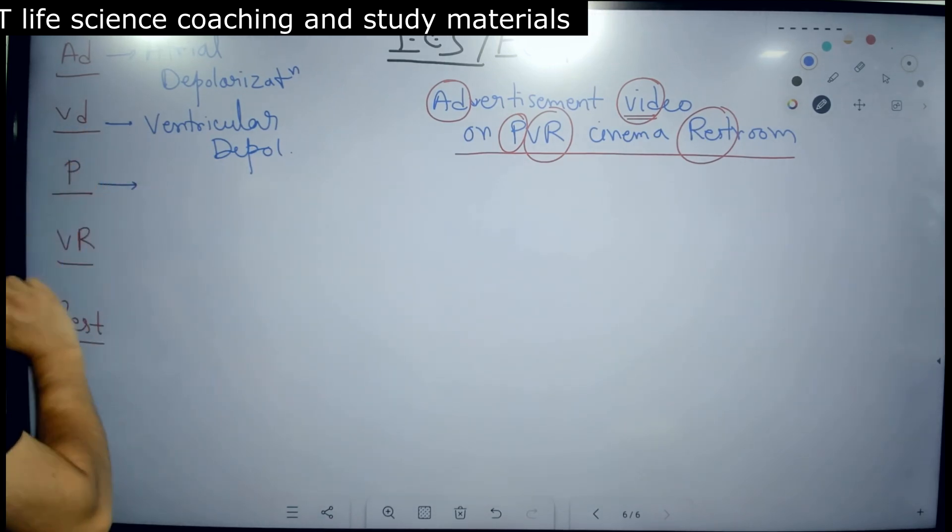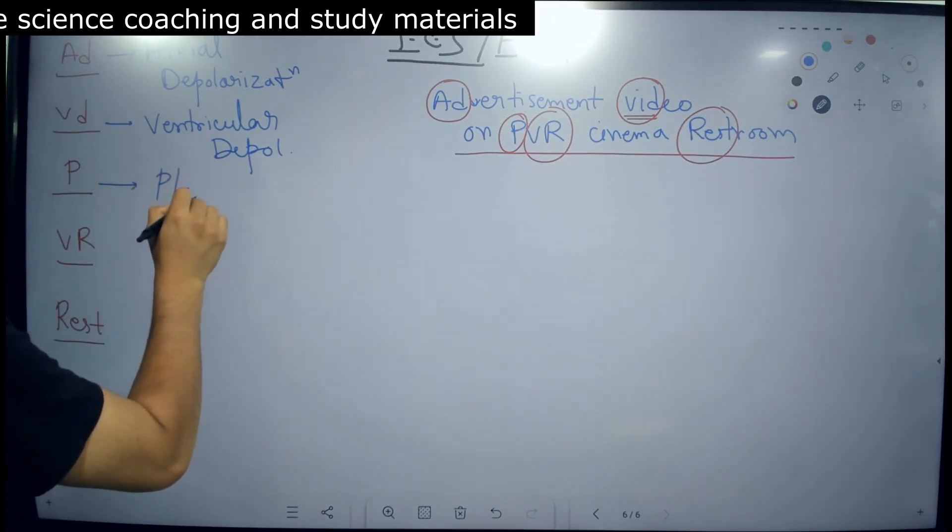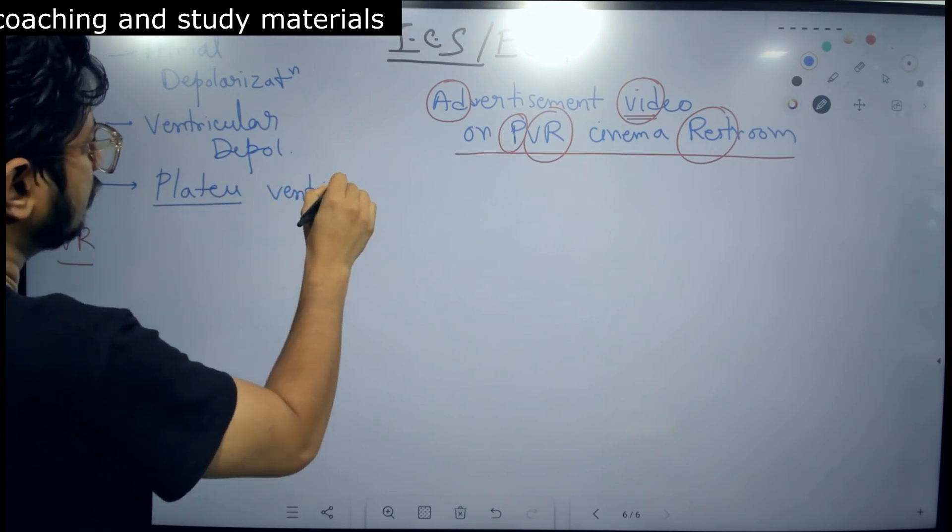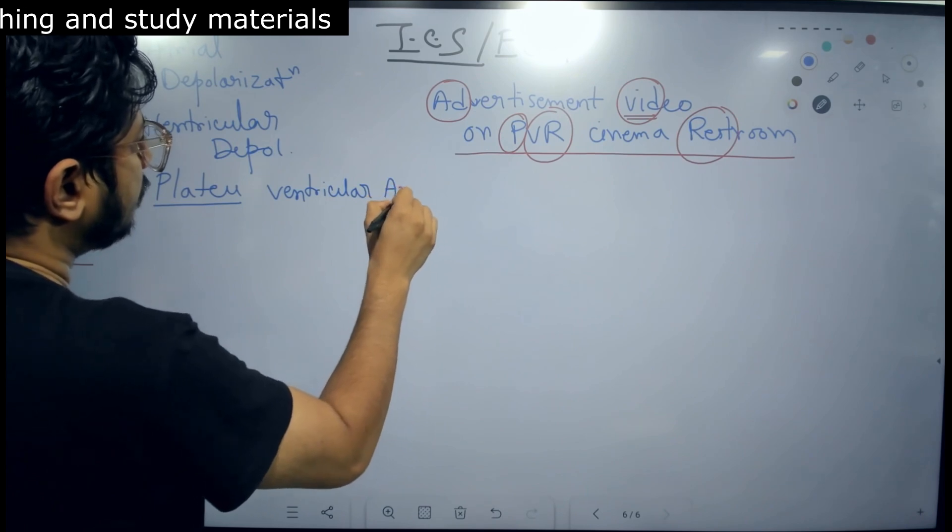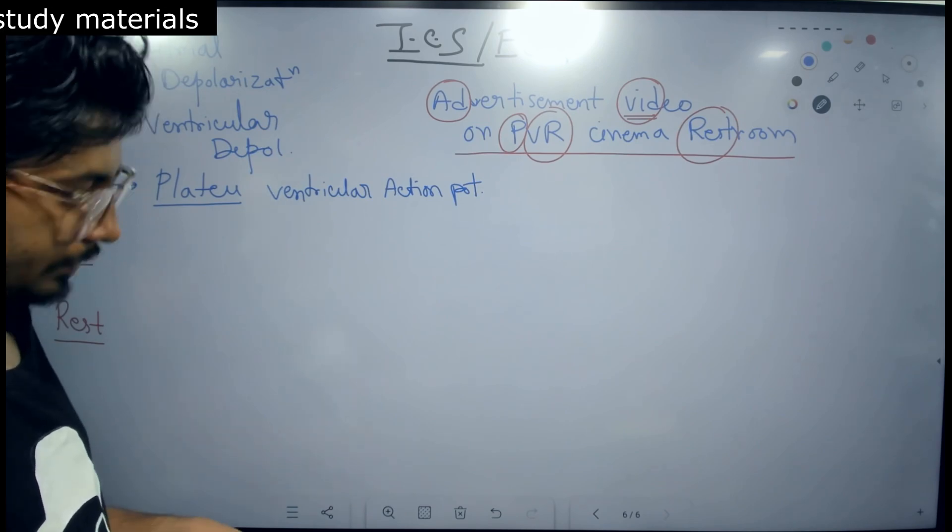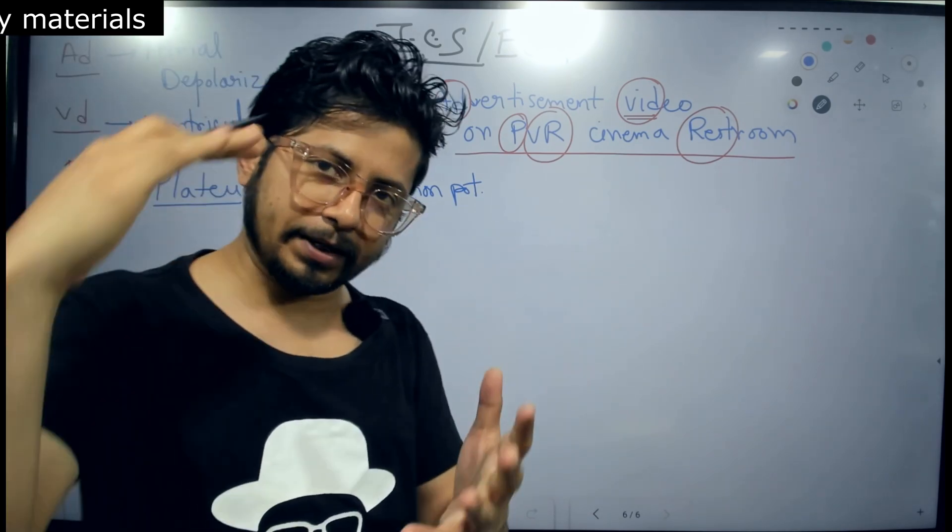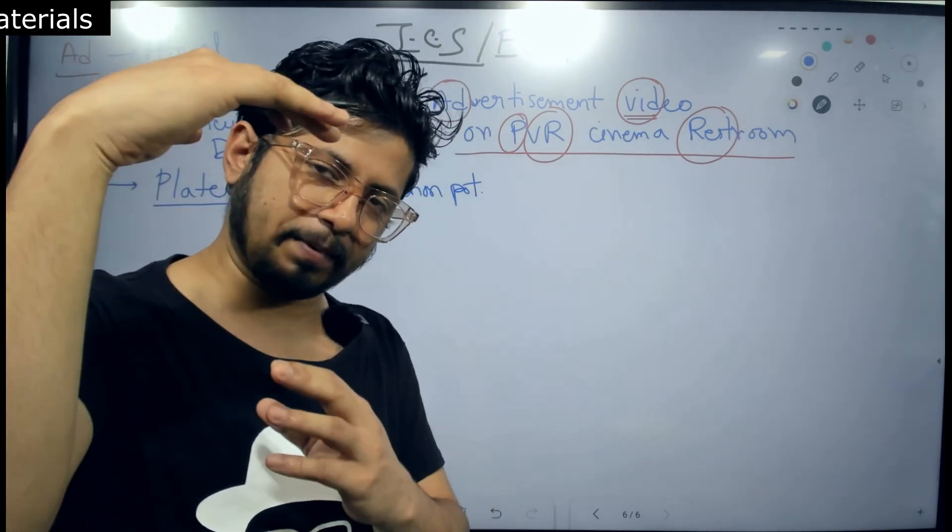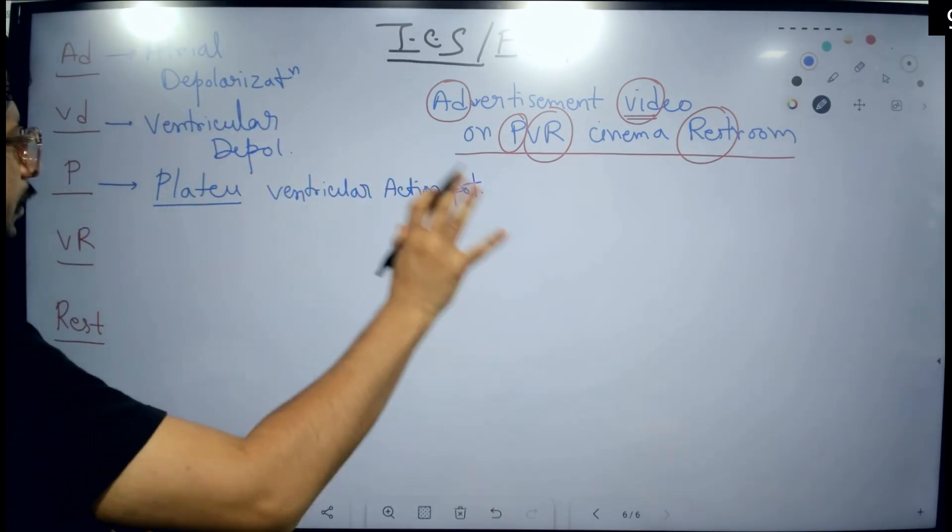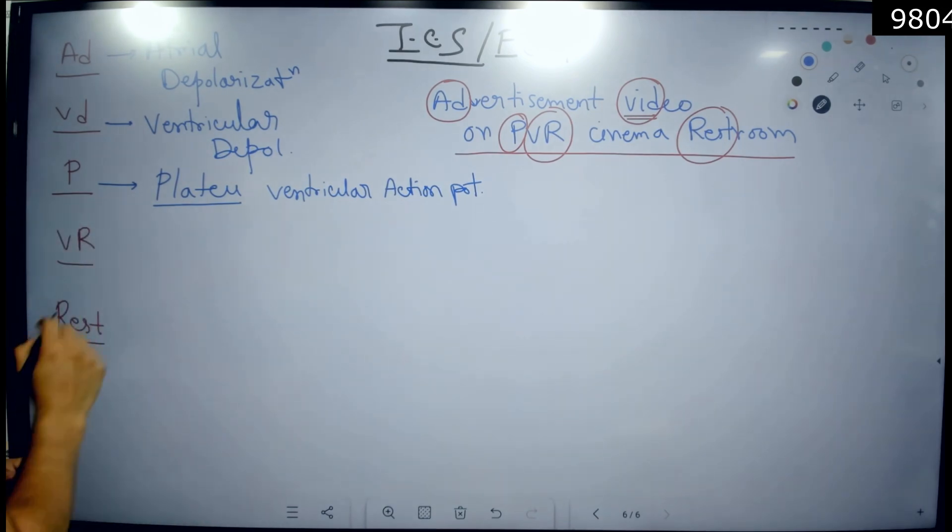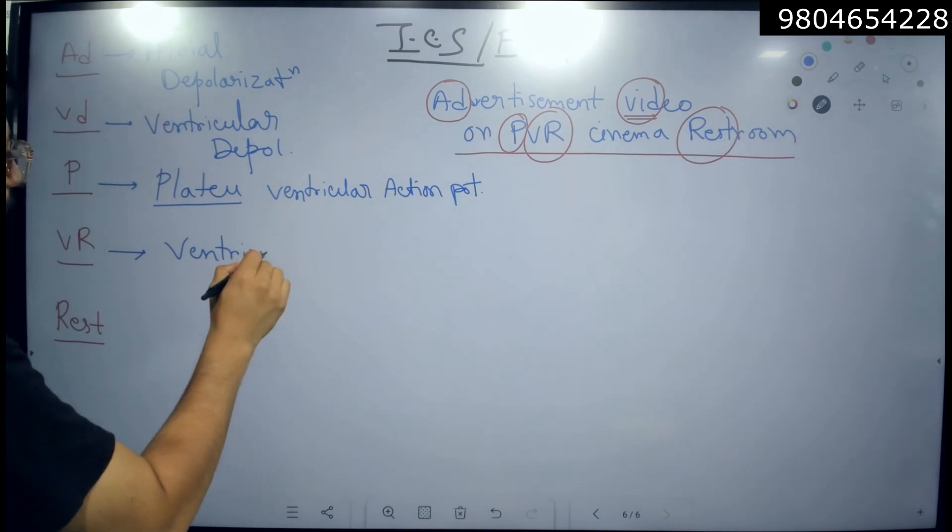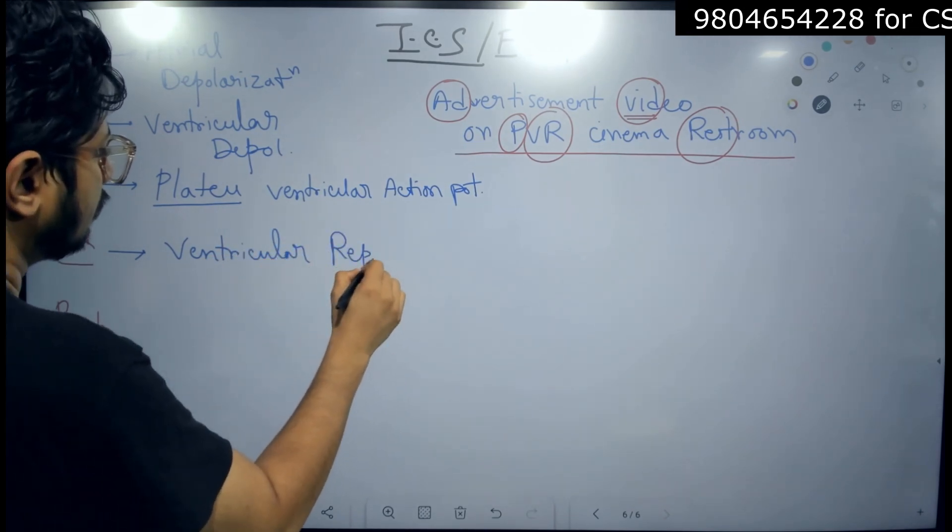Ventricular depolarization is VD and this is final ventricular depolarization. Then we have P for plateau, for ventricular action potential. So there will be a plateau phase reached after the ventricular depolarization, the plateau phase is reached for the ventricle action potential. Then we have VR, ventricular repolarization.